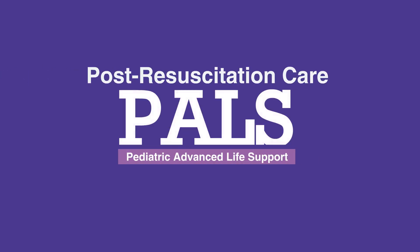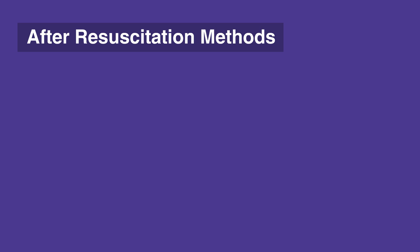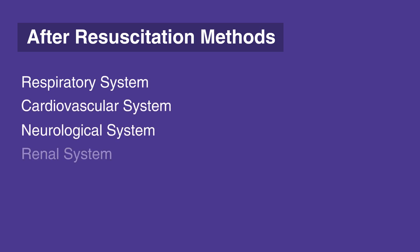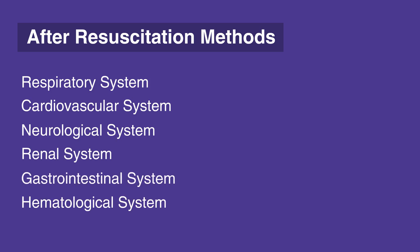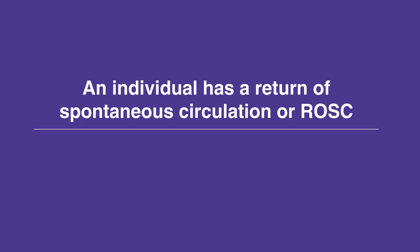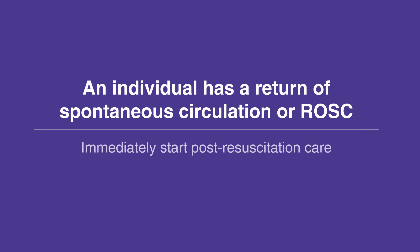Chapter 11: Post-Resuscitation Care. Welcome to the lesson on post-resuscitation care. In this video, we will discuss what to do after resuscitation — methods to care for the individual's respiratory system, cardiovascular system, neurological system, renal system, gastrointestinal system, and hematological system. If an individual has a return of spontaneous circulation, or ROSC, start post-resuscitation care immediately.